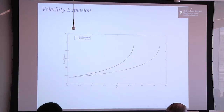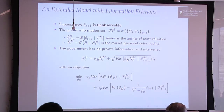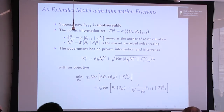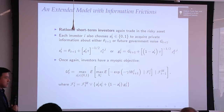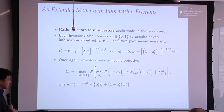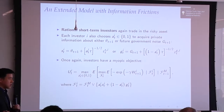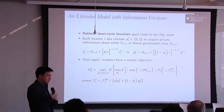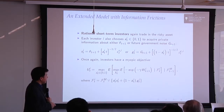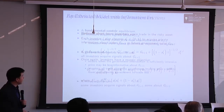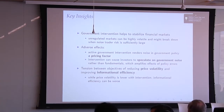Now, if we make the setting more realistic and suppose the asset fundamental is unobserved — nobody knows the fundamental — we still let the government intervene to reduce noise. But investors now face a realistic choice: they could acquire information, but they can choose whether to analyze the fundamental or to analyze the noise introduced by the government in the intervention process. Which they go for depends on which is more important. If intervention is sufficiently intensive, they might actually want to focus on the government noise — which is exactly what happens in the model.